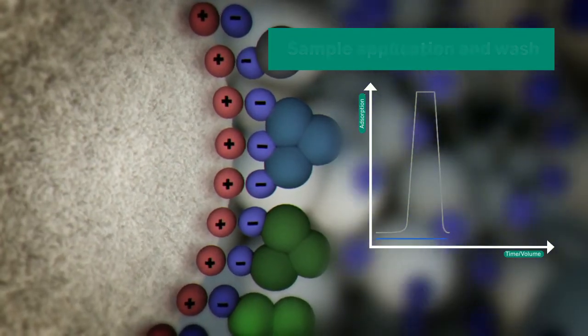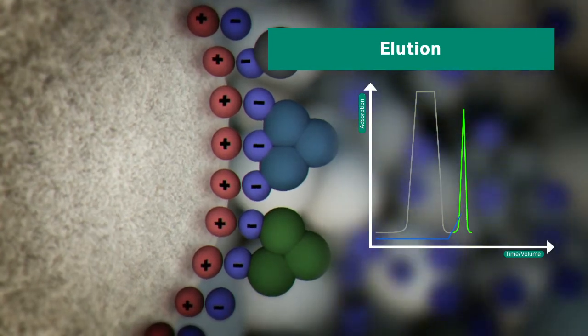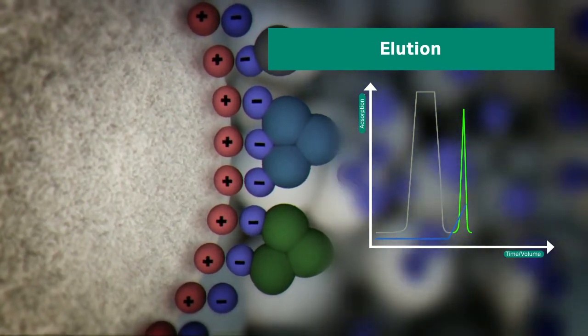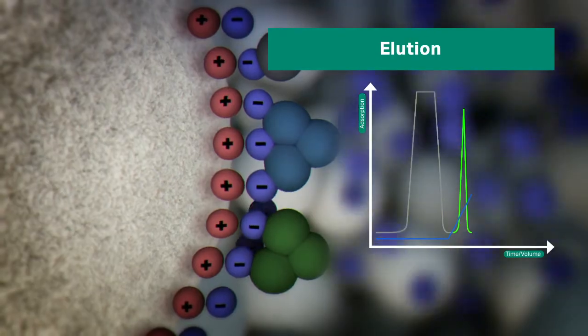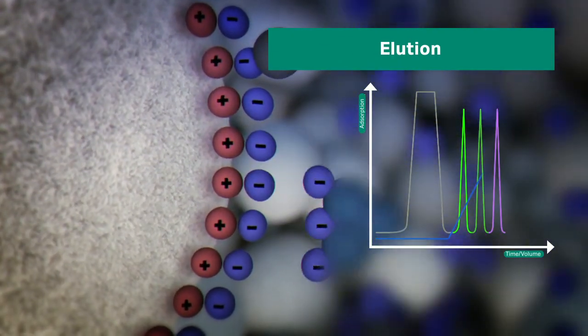In the third step, elution, biomolecules are released from the ion exchanger by a change in the buffer composition. A common way is to increase the ionic strength with sodium chloride, or another simple salt, in order to desorb the bound proteins.